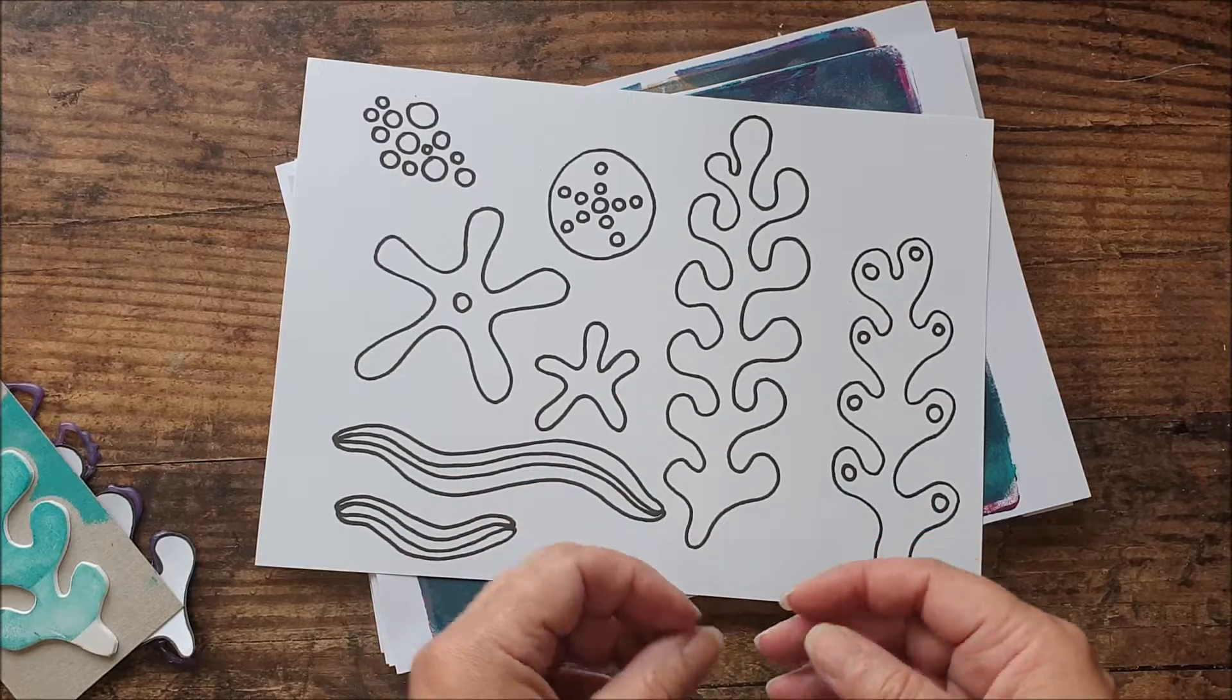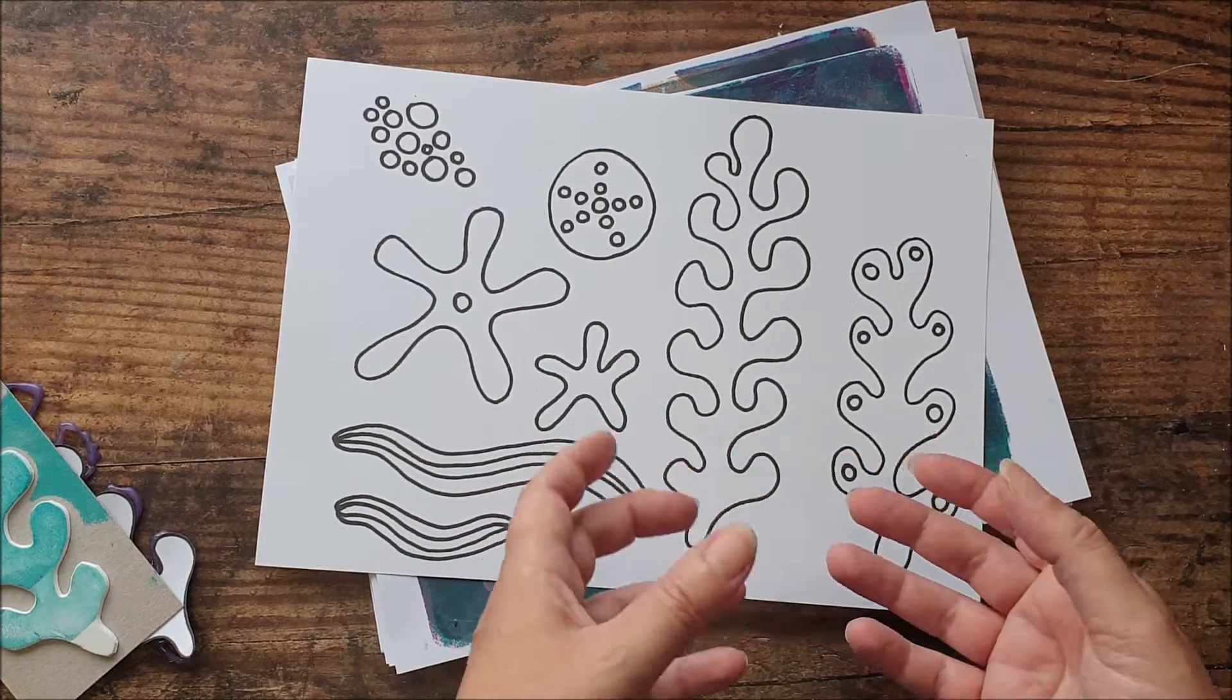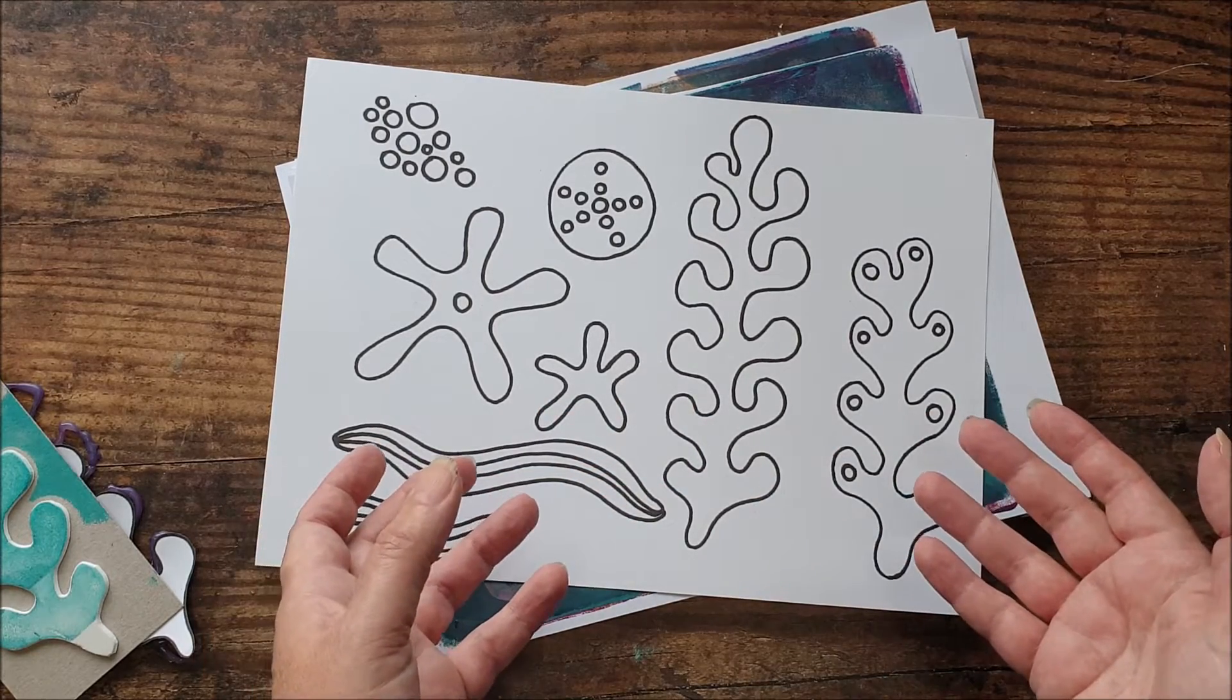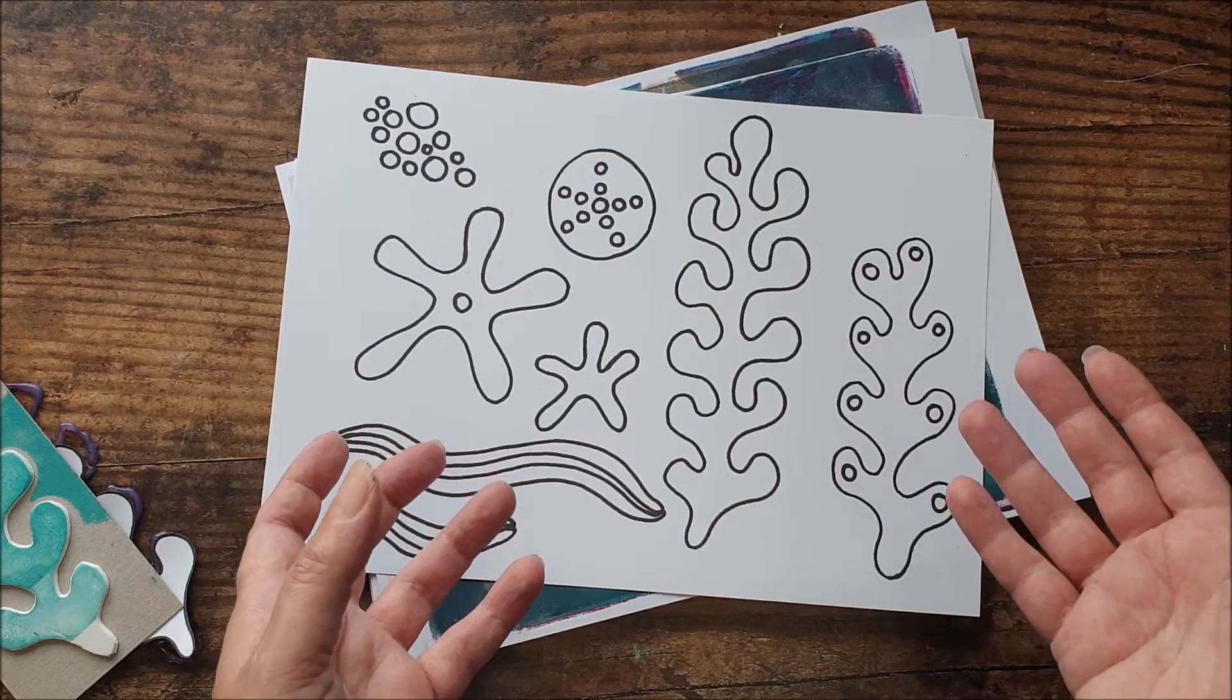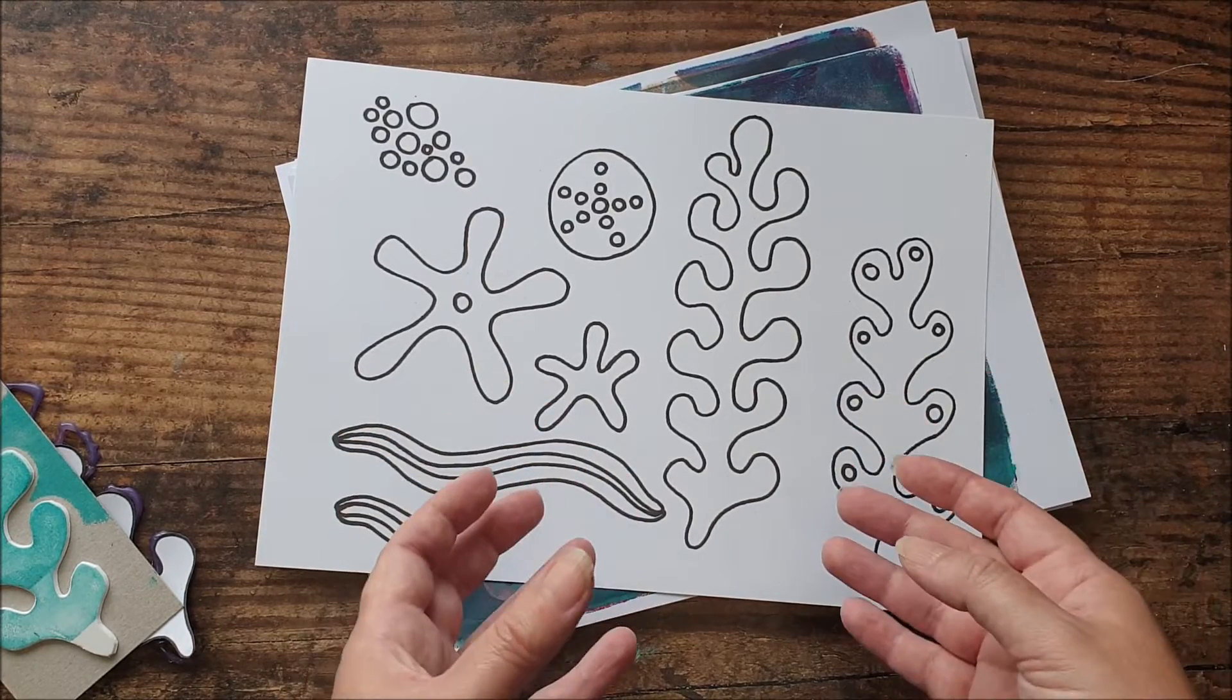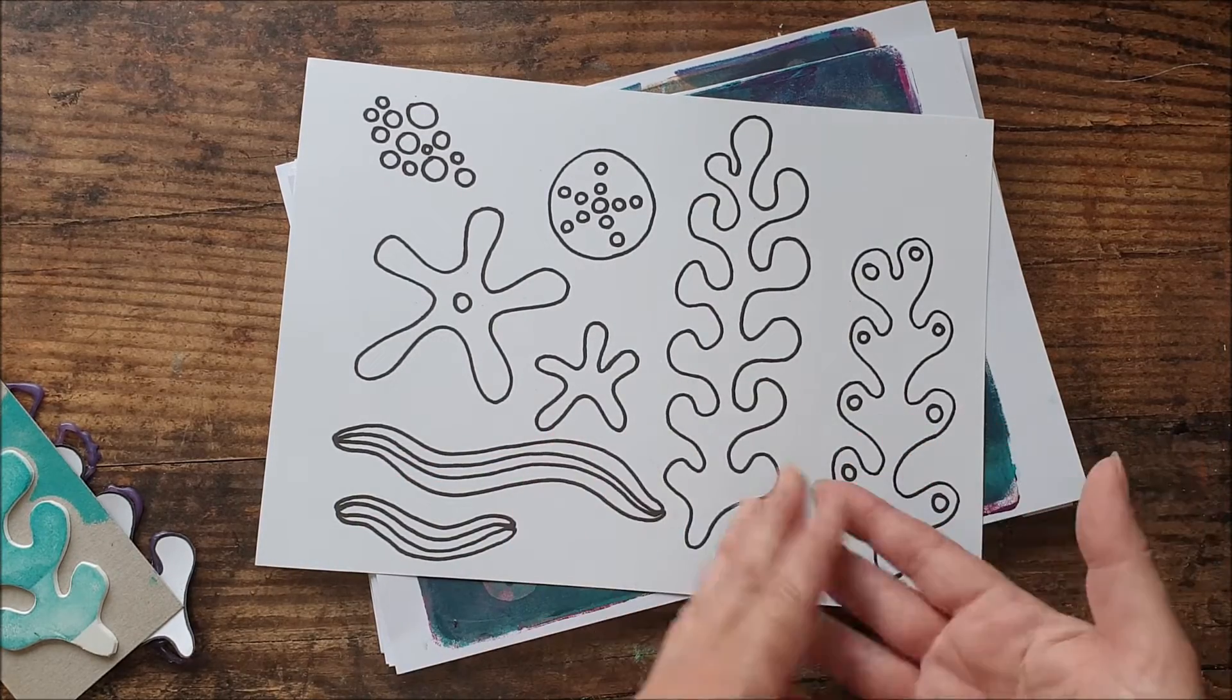We're going to be doing some printing, but before we start printing, I'm going to show you how simple it is to create stamps, stencils and masks. So you don't need to go out and buy them from a craft store if you don't have that opportunity or if you just want to do something that is custom, something that's individual to you. It's a really simple and straightforward process and great fun.